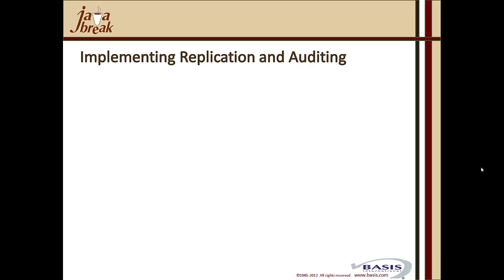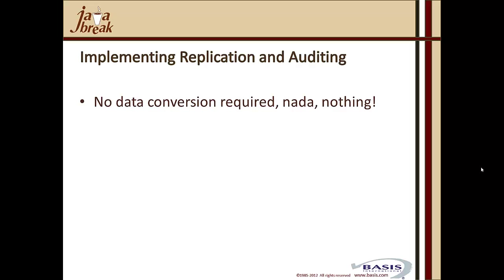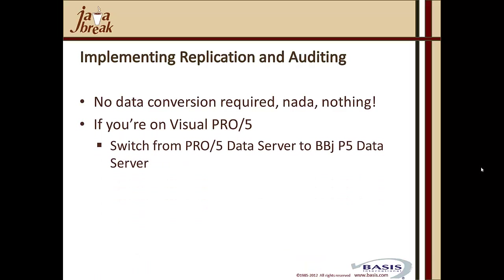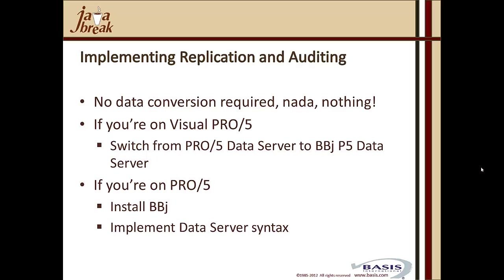Now let's talk about implementing replication and auditing. Across the board, there's no data conversion required — none — regardless of whether you're running Pro5, Visual Pro5, or BBJ. To utilize replication and auditing, you run on the BASIS database under BBJ's control. If you're on Visual Pro5, you switch from the Pro5 data server to the BBJ Pro5 data server. If you're on Pro5, you install BBJ on your server and implement the data server syntax in your config.bbx or in your code. If you're on BBJ, there's nothing to do — replication and auditing are simply available and configurable through Enterprise Manager.